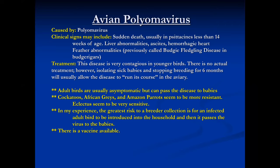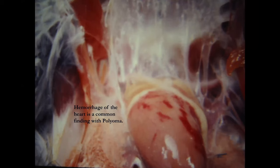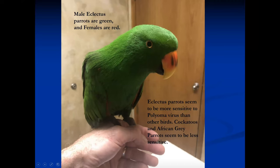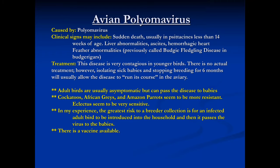One of the big things you'll see is hemorrhage on the heart — bleeding on the heart. This is about the only disease where I regularly notice that. If you see bleeding on the heart and have younger birds dying, polyomavirus is high on your differential list.